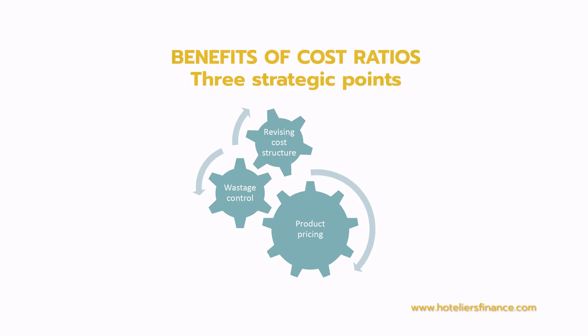I'll close with three key points: use this cost ratio for product pricing, wastage control, and revising the cost structure. When you start using this cost ratio regularly — weekly or monthly — and creating a trend, you can see how your business is performing and start making quick strategic decisions to improve and sustain your business. If you have any questions, please write in the comments or connect through my website hoteliersfinance.com. Have a great day, see you soon.